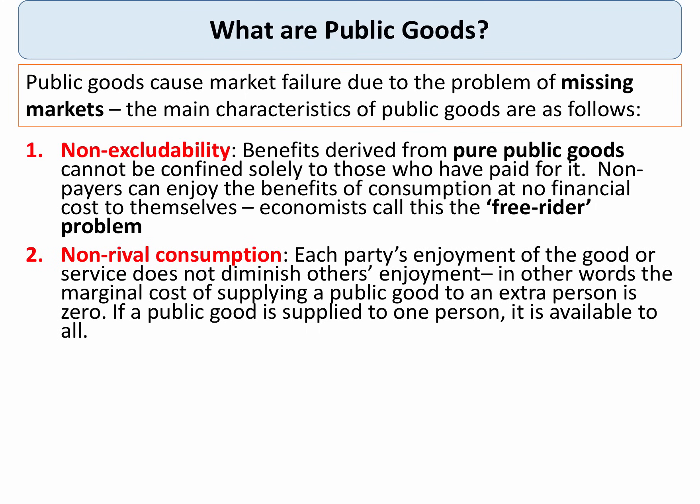The second characteristic of a public good is non-rival consumption. This means that consumption by one person does not restrict the consumption available by somebody else. In other words, the marginal cost of supplying a public good is zero. If you supply a public good to one person, you make it available to all — non-rival consumption.